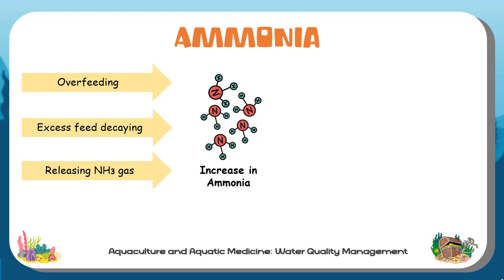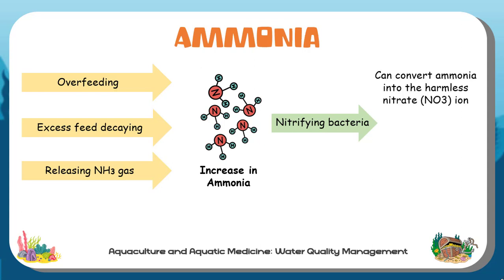Under some circumstances, other foreign waste may accumulate in dangerously high quantities. Fortunately, nitrifying bacteria that can live on nearly any inert substrate — such as rocks, oyster shells, or plastic chips containing calcium carbonates — can convert ammonia into the harmless nitrate ion, which can be converted to partially reduce or buffer ammonia concentrations.